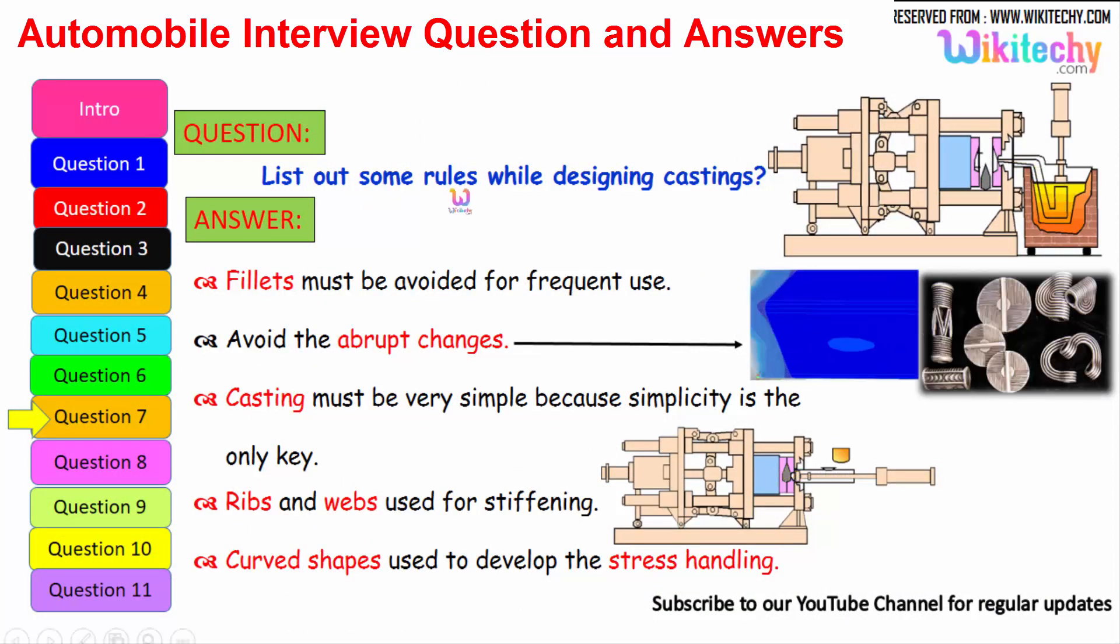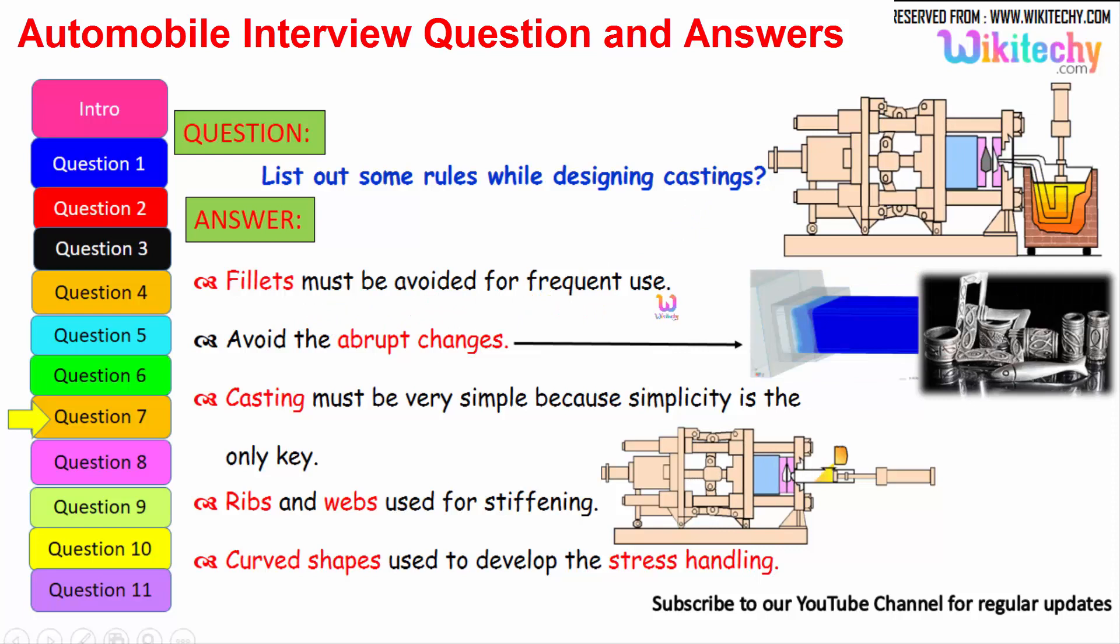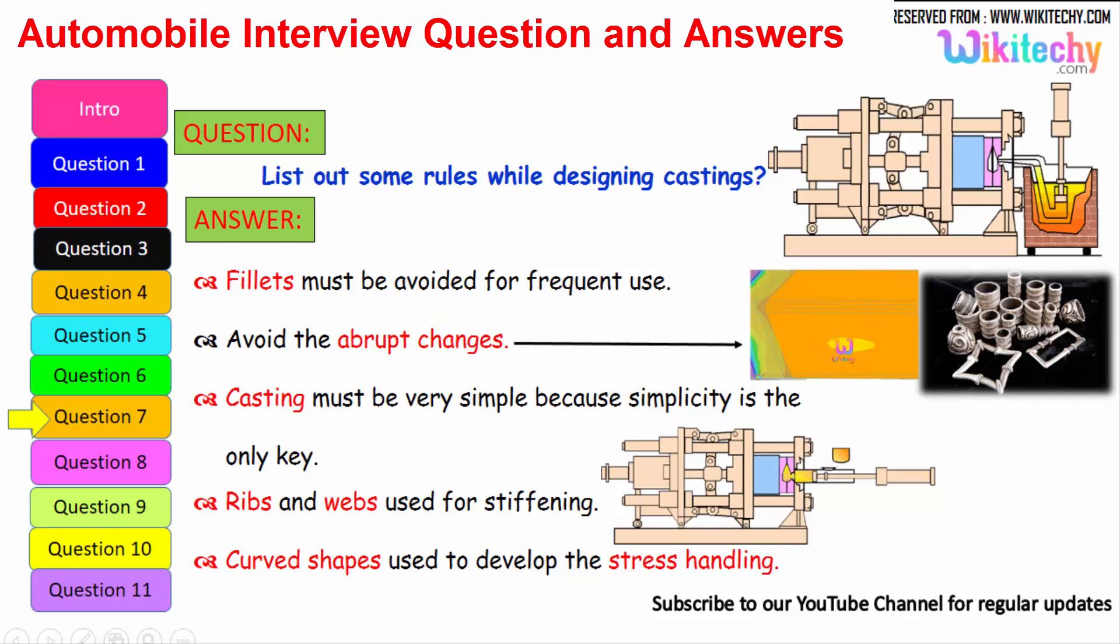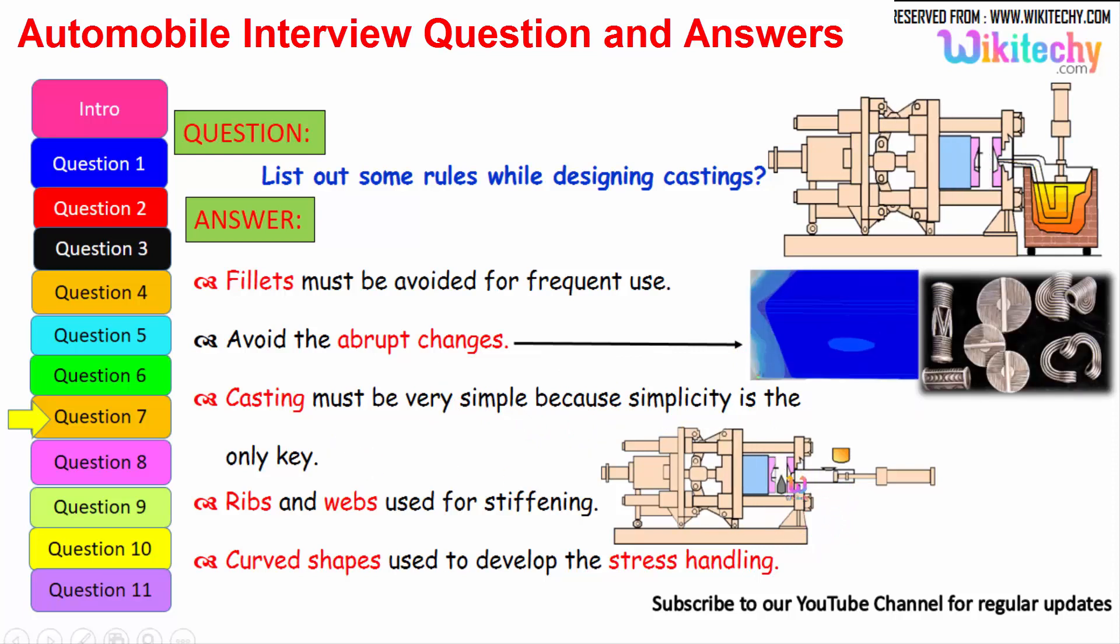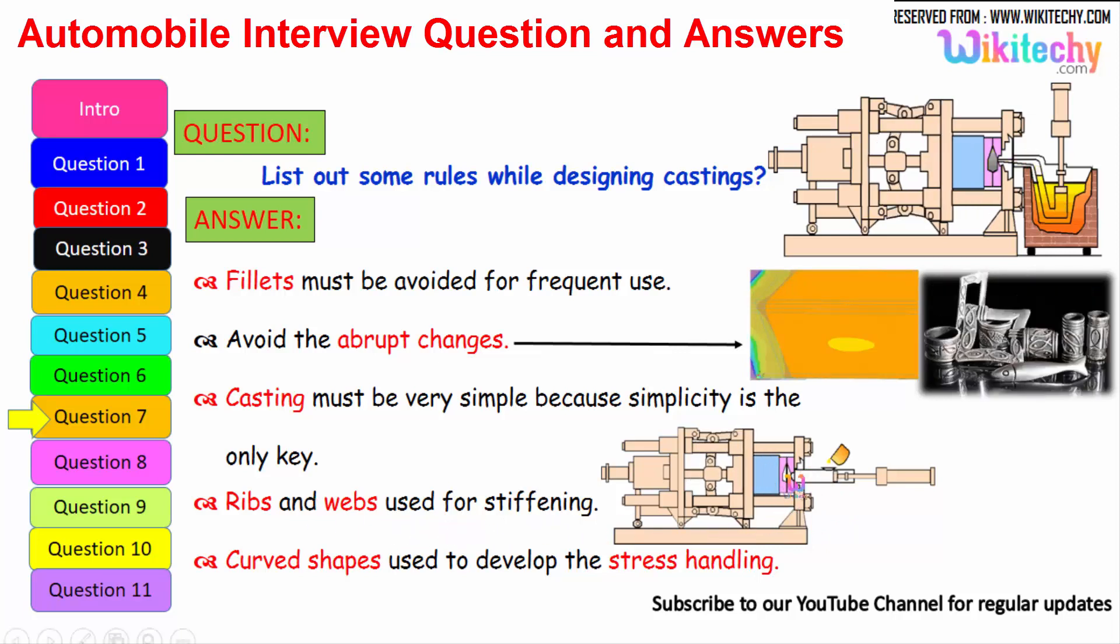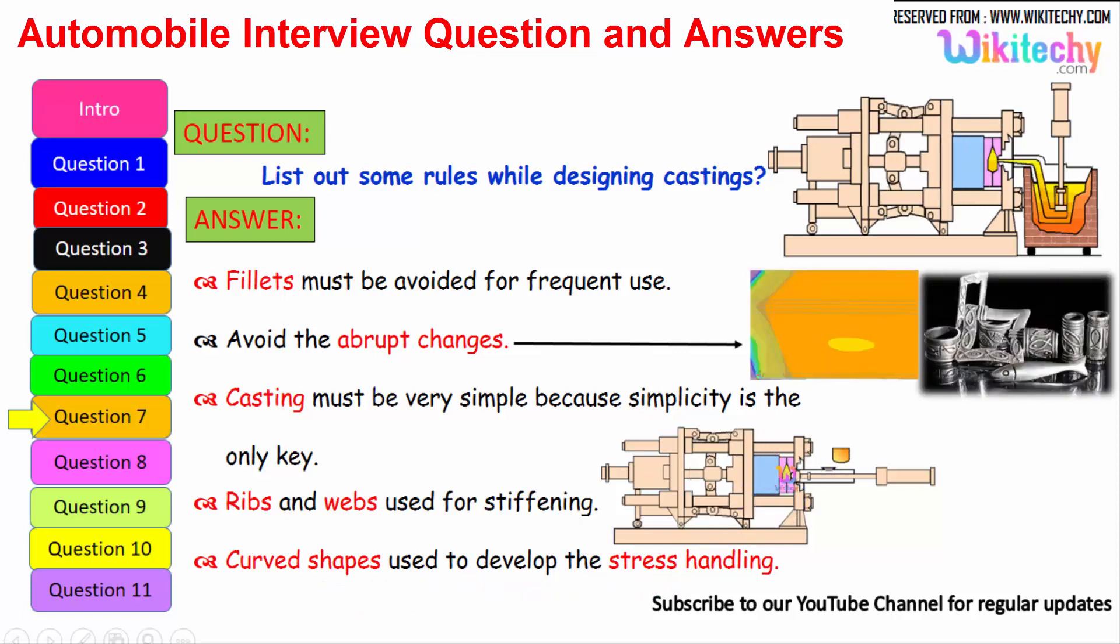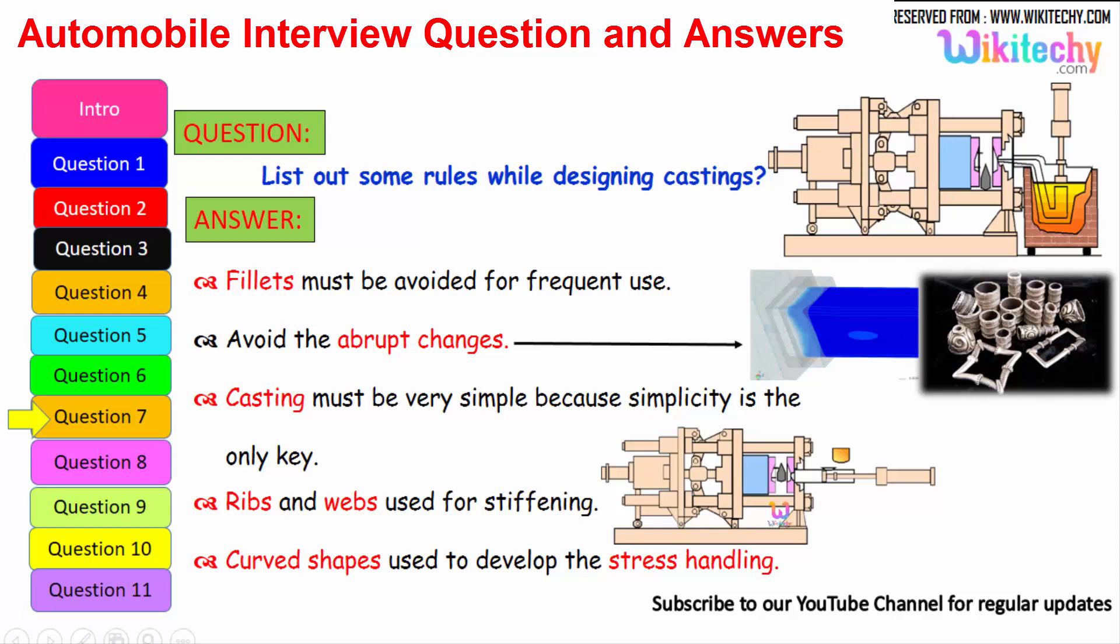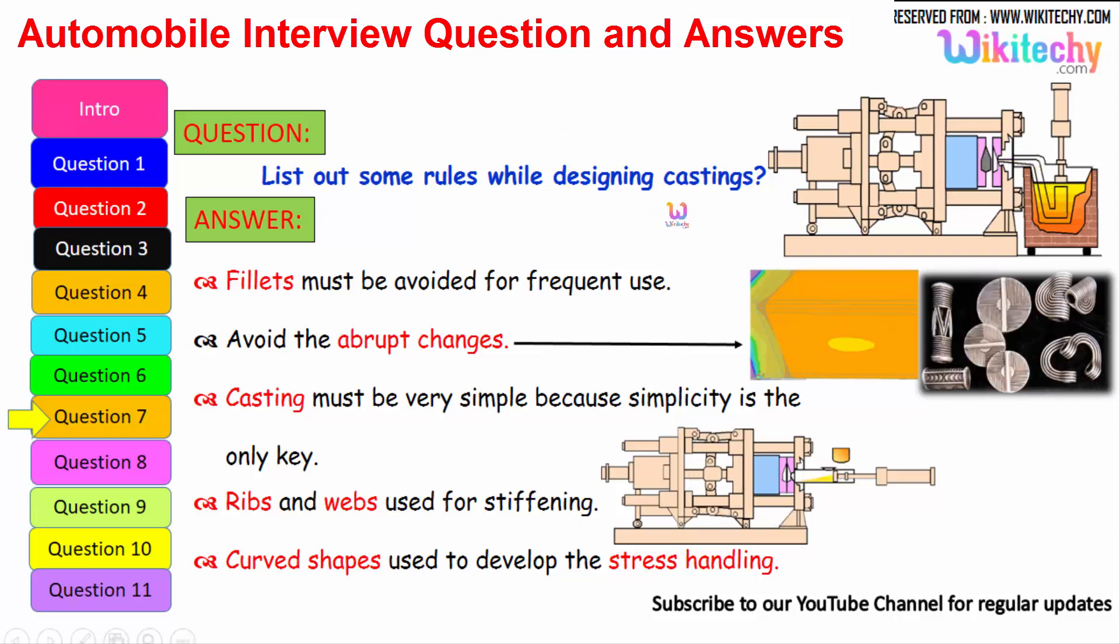Let us see some of the rules while designing castings. Fillets must be avoided for frequent use, that is the first one. Avoid the abrupt changes, it should not change. Casting must be very simple because simplicity is the only key. Ribs and webs used for stiffening. You should have the ribs over here. The curved shape should be used to develop the stress handling. It should be a curved shape to avoid the stress handling. These are some of the rules which we have to follow for castings.